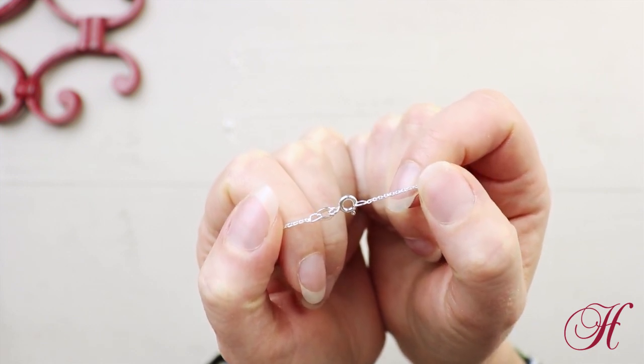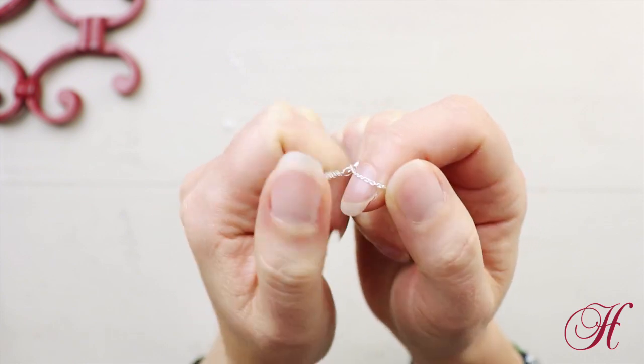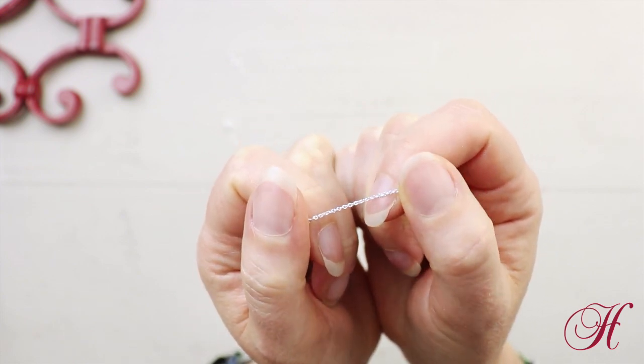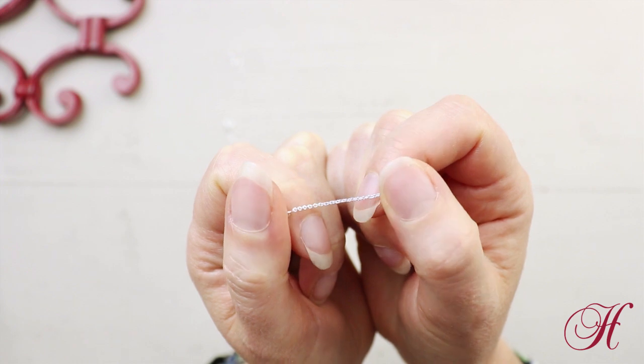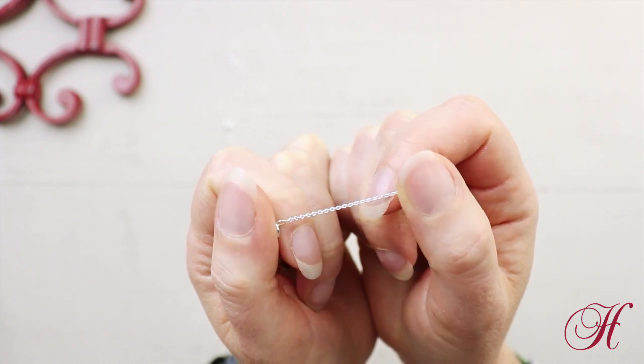The jump rings at the end are soldered closed for security and you can see that the links in this chain are tightly woven so there's not much of a space for cold connection attachments.